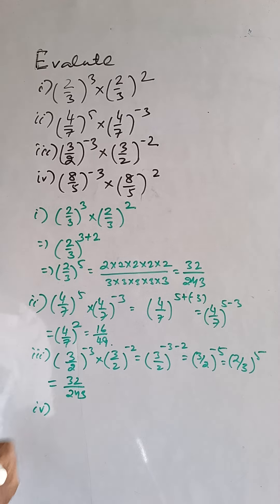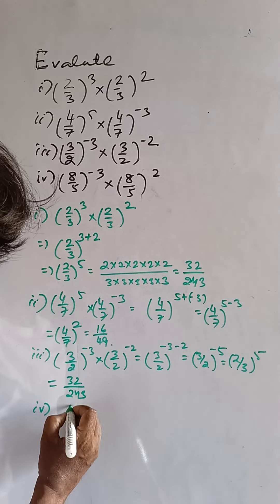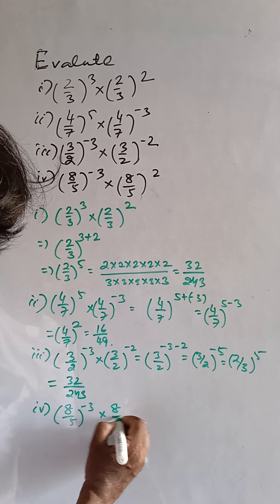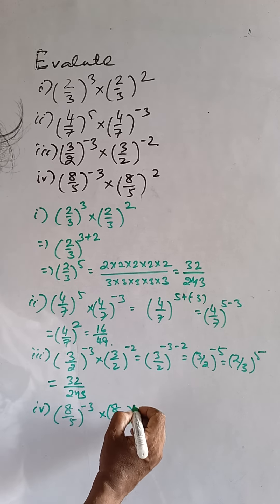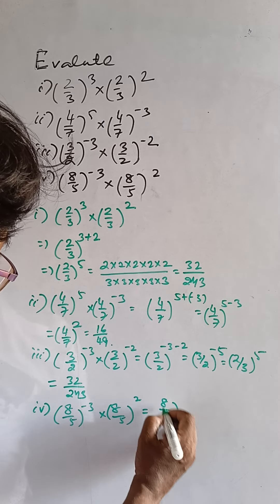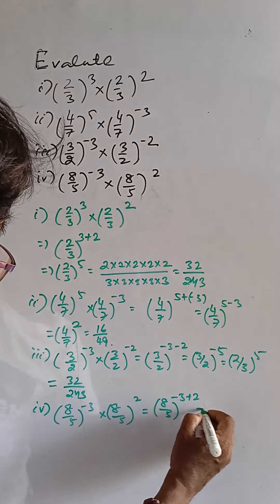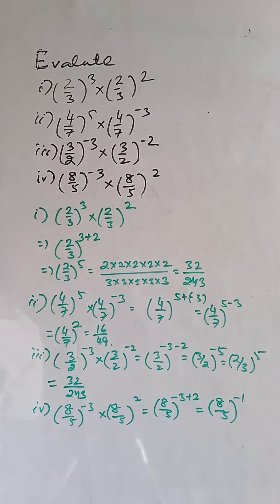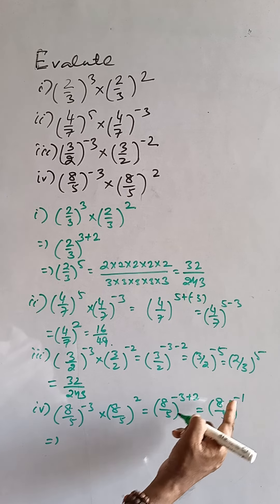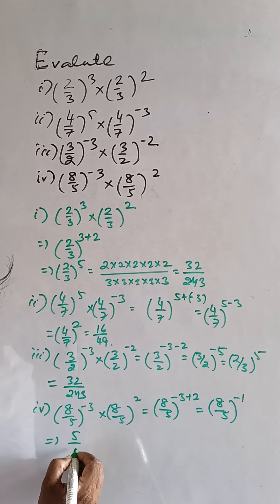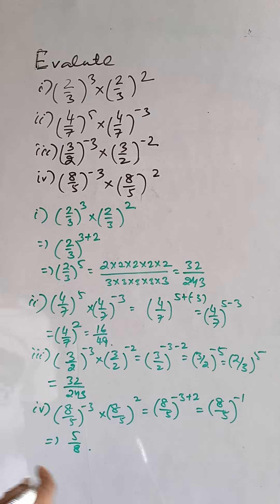The 4th case is 8 by 5 whole to the power minus 3 into 8 by 5 whole to the power 2. That is 8 by 5 whole to the power minus 3 plus 2. Finally this is 8 by 5 whole to the power minus 1. Removing the minus power, the form will reverse, so the answer is 5 by 8.